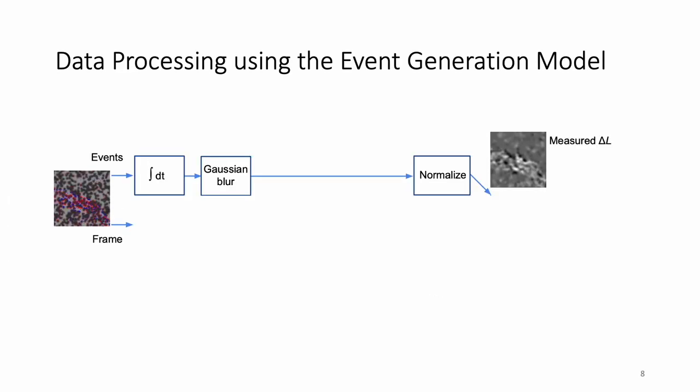Combining event and frame data, we use the linearized event generation model to estimate optical flow. The input is the events and frames, which are spatially and temporally aligned. By integrating events during a small amount of time, we obtain a brightness increment, which is our measurement.